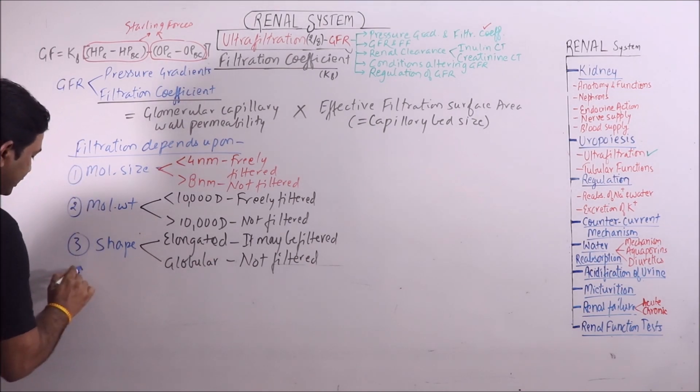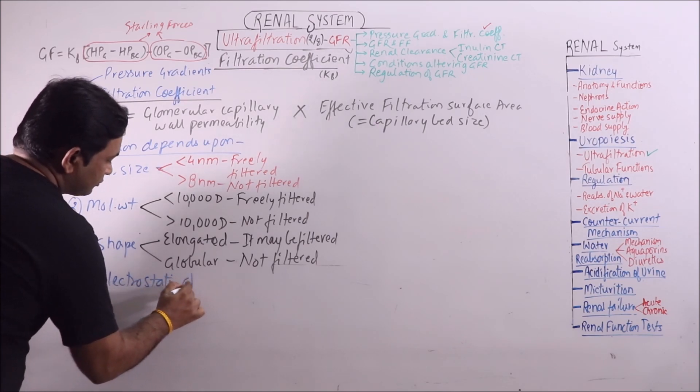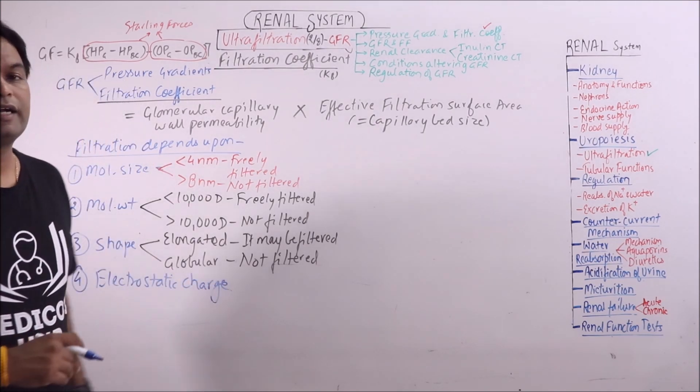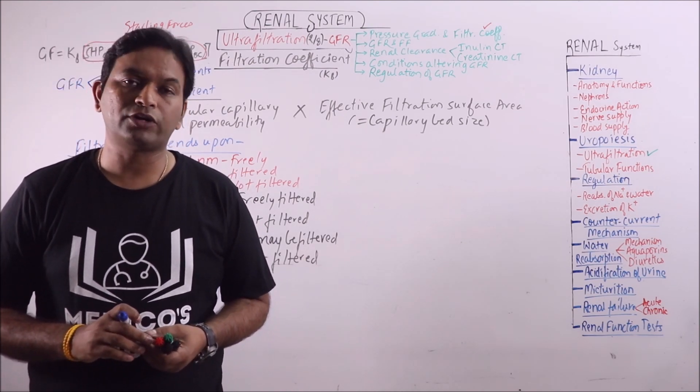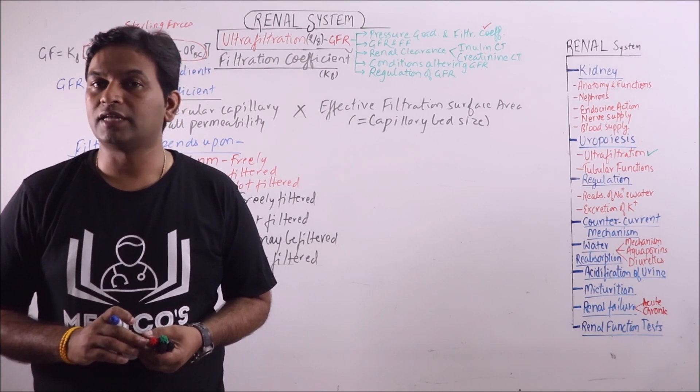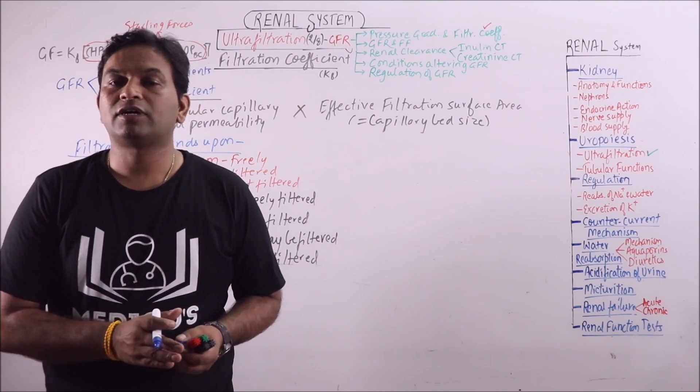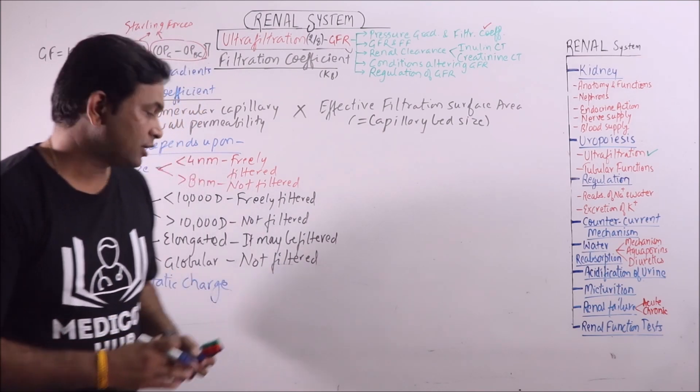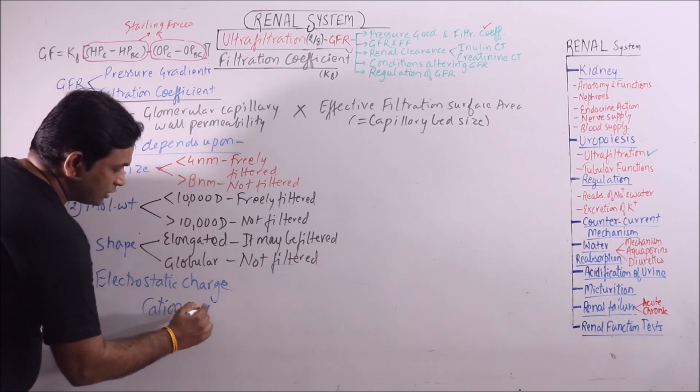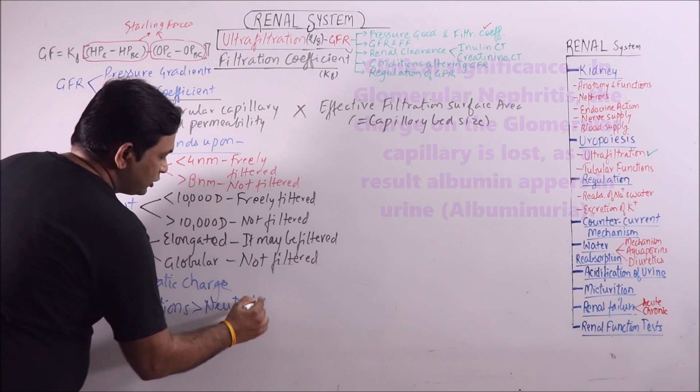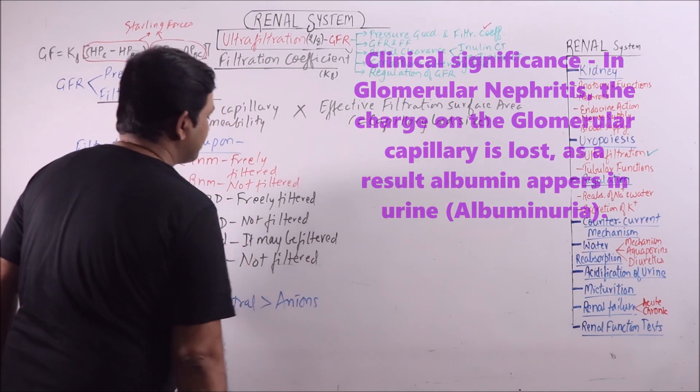Then electrostatic charge. We should know that the glomerular capillary wall is negatively charged because of the presence of negatively charged cellular proteins. And that will not allow the negatively charged particles to go through it. So the negatively charged particles or anions are least permeable through the capillary wall. We can say that cations can pass more easily in comparison to neutral particles, and anions are least permeable.